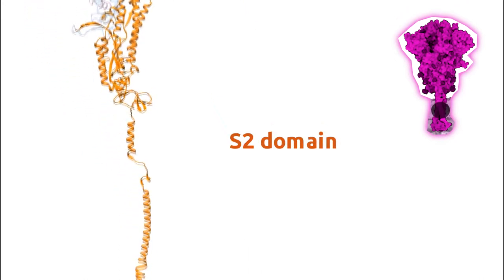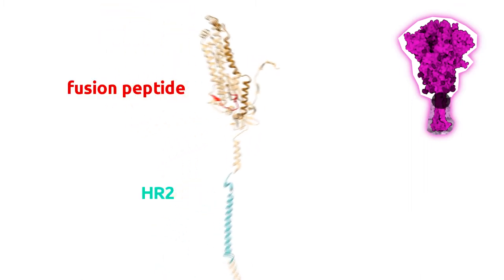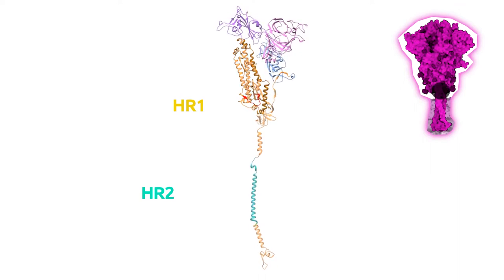The C-terminal of the spike comprises the S2 subunit responsible for mediating membrane fusion. The spike is composed of a hydrophobic fusion peptide, heptapeptide repeat sequence 1 and 2, a transmembrane domain, and a cytoplasmic tail.